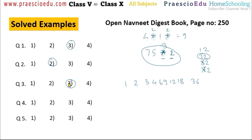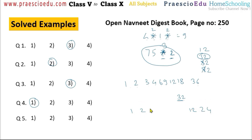Question number 4: which of the following numbers is not a factor of 32? A factor of a number cannot be greater than that number. Option number 1 has 64, which is greater than 32, so 64 cannot be a factor of 32. Option number 1 is correct. Question number 5: what is the sum of divisors of 24? The divisors are 1, 2, 3, 4, 6, 8, 12, 24. Their sum is 1+2+3+4+6+8+12+24 = 60, given in option number 3.